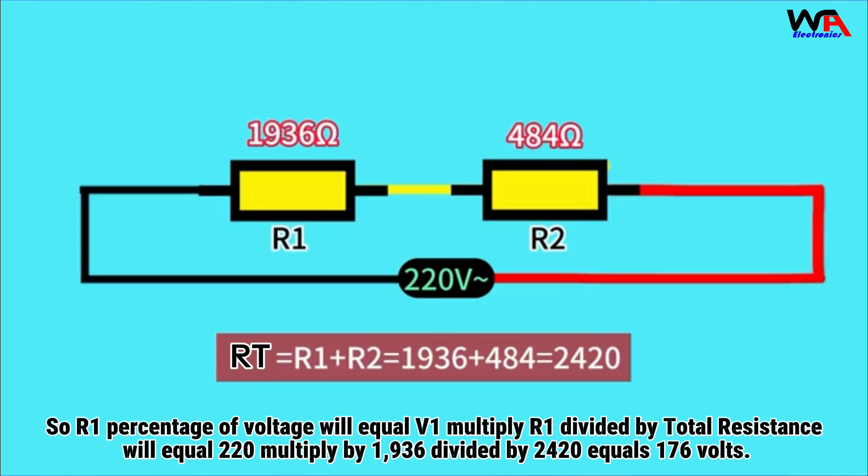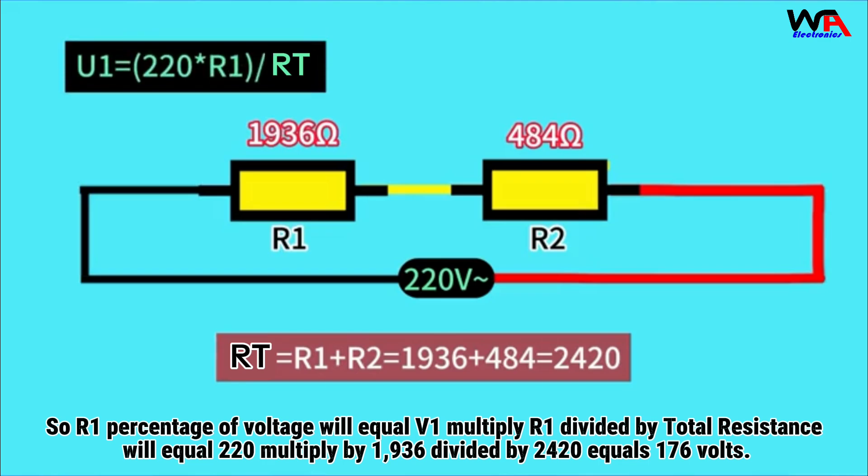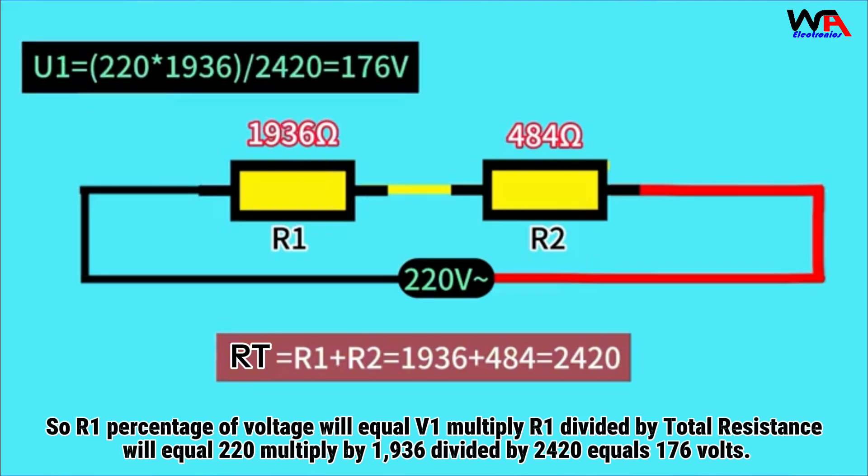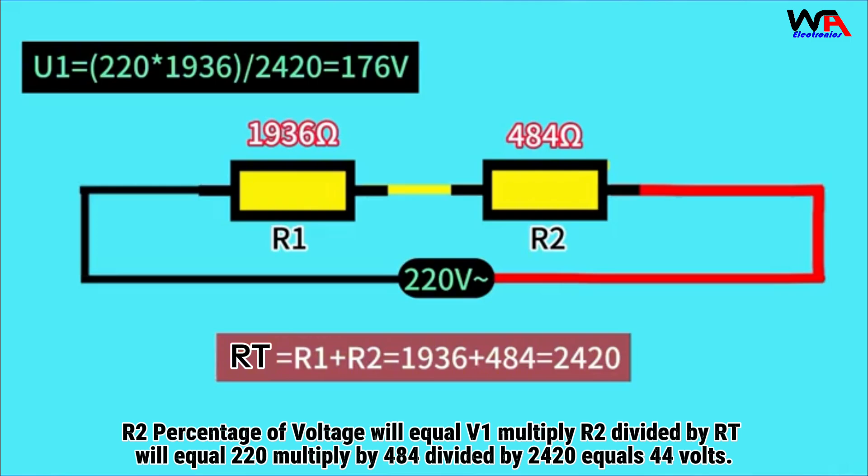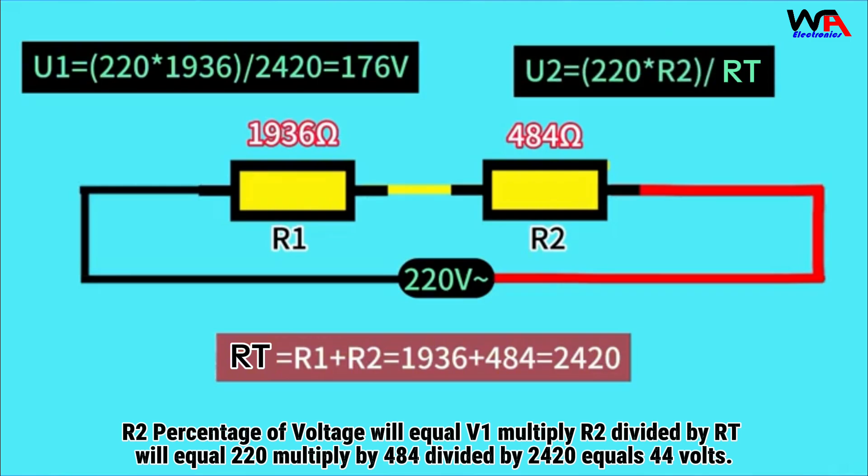So R1 percentage of voltage will equal V1 multiply R1 divided by total resistance, which will equal 220 multiply by 1936 divided by 2420, equals 176 volts. R2 percentage of voltage will equal V1 multiply R2 divided by RT, which will equal 220 multiply by 484 divided by 2420, equals 44 volts.